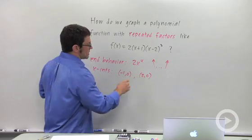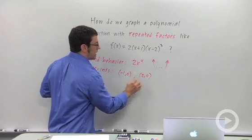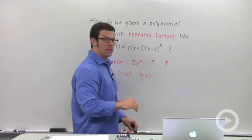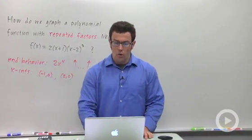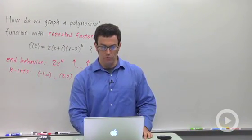The only thing we don't really know is how the graph behaves near 2, 0. So I want to show you a little demonstration that will give you some intuition about what happens when we've got repeated factors.